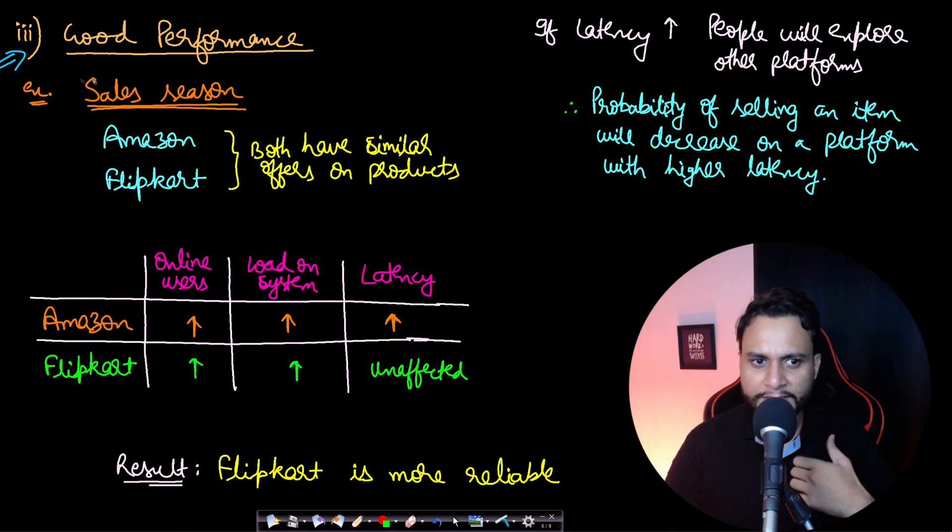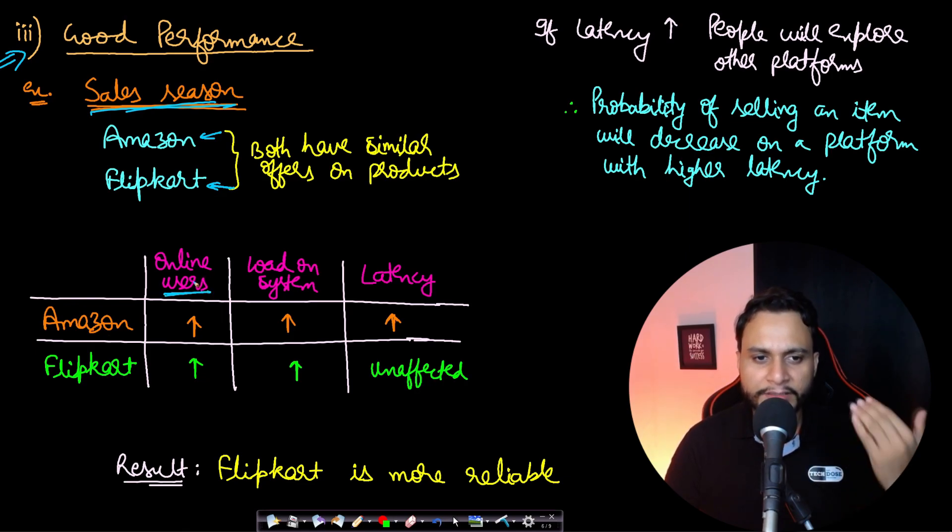Now the third point is good performance. Let's consider the sale season is present and we will consider two e-commerce websites: Amazon and Flipkart. Flipkart runs in India—you can take it as eBay or something. Both have similar offers on products. In the sale season, the number of online users on the platform will highly increase. So I have given a table where the up arrow shows that it is increasing. On Amazon, the online users have increased, and also on Flipkart it has increased.